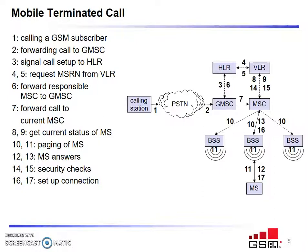The HLR in turn communicates with the VLR, the visitor location register. From the VLR, it gets information about the mobile station — specifically the roaming number of the mobile station, that is MSRN. With that information from VLR, the HLR receives it and passes it back to the GMSC, the gateway MSC.